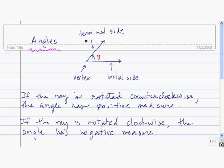If the angle is positioned so that the vertex is at the origin and the initial side corresponds with the positive x-axis, then the angle is said to be in standard position. So vertex is at the origin and initial side is on the positive x-axis.